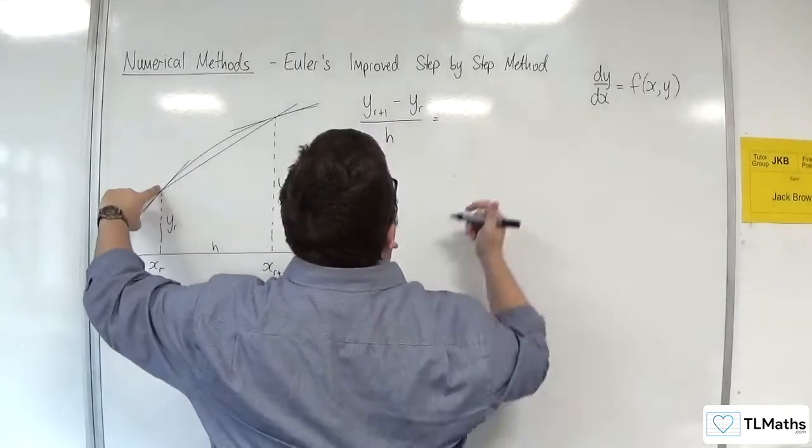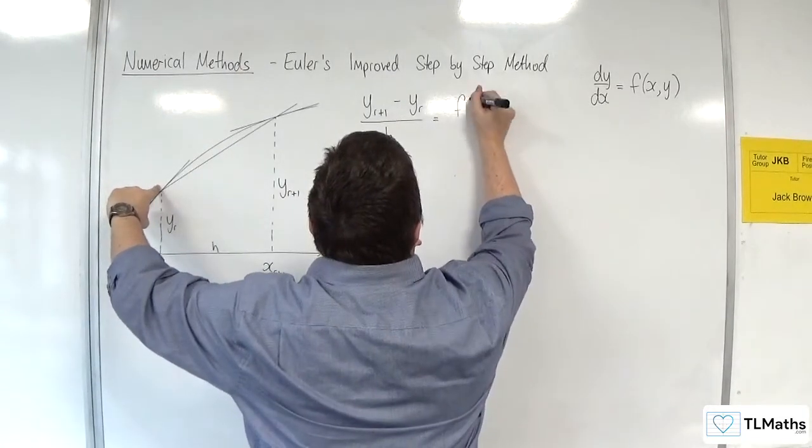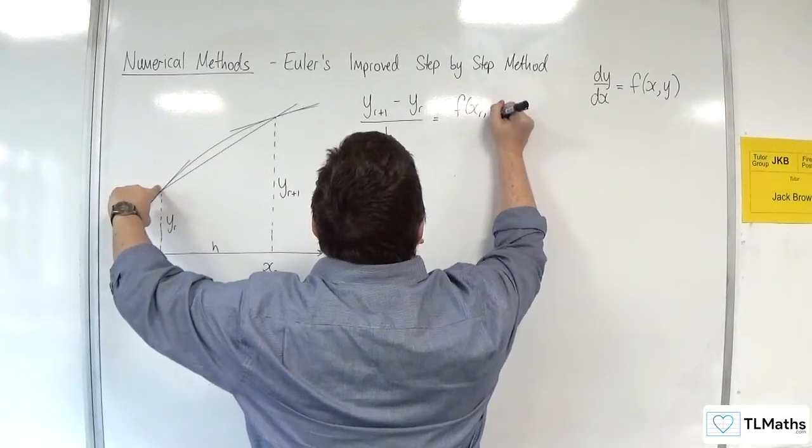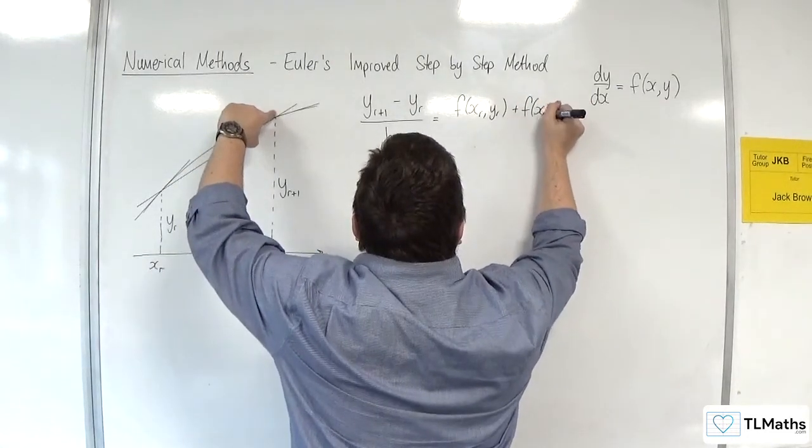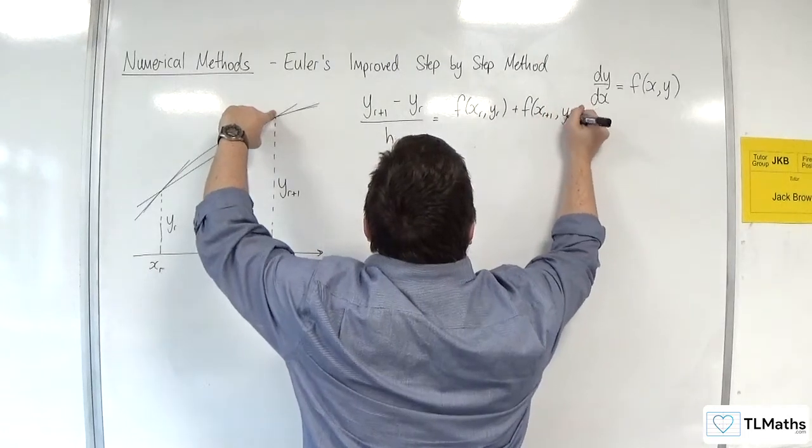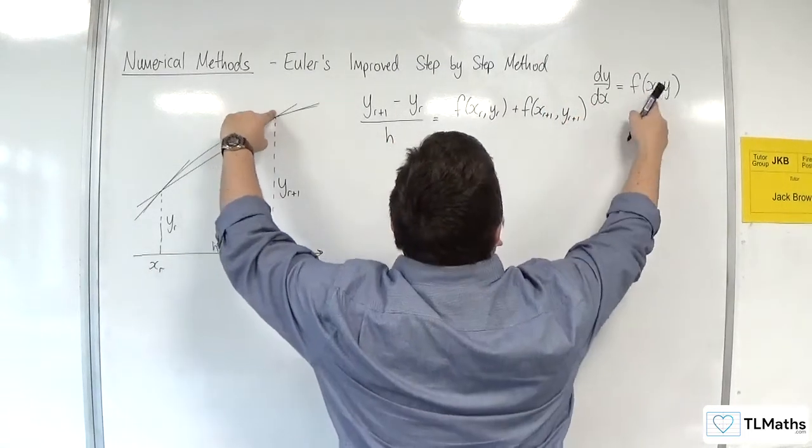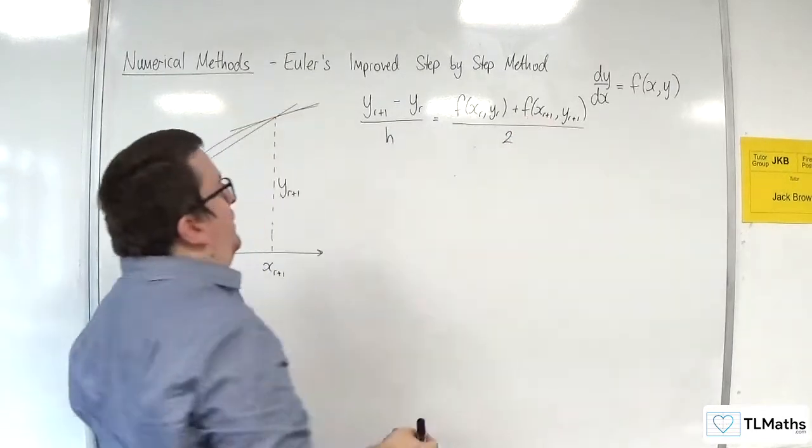Now, for that point there, that would be F of XR, YR. And for that point there, it would be XR plus 1, YR plus 1, because that's our gradient function. We're adding them together and dividing by 2.